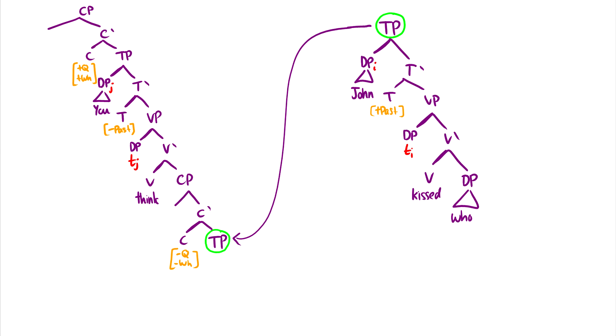So here we have some movement that's occurred, which I will do in light blue. So we have the agent of kiss being John moving up to spec DP. I'm not going to write case here. We also have you. So who do you think? You are the thinker. So that has moved up. And now we have this who.